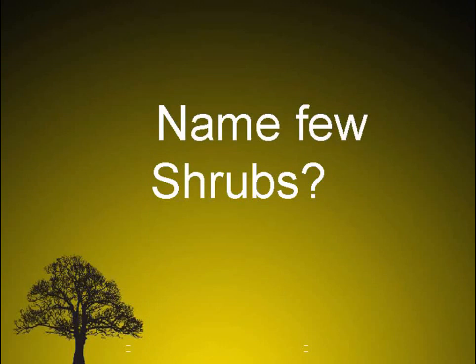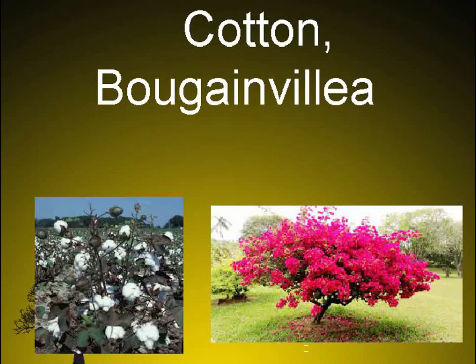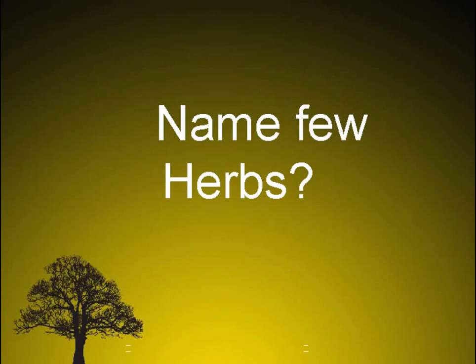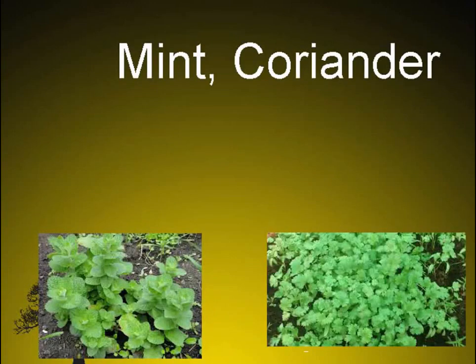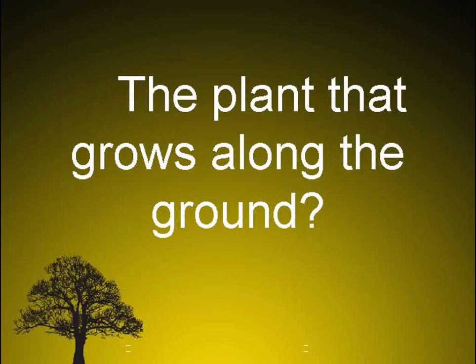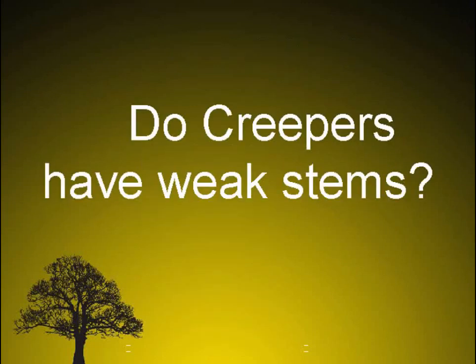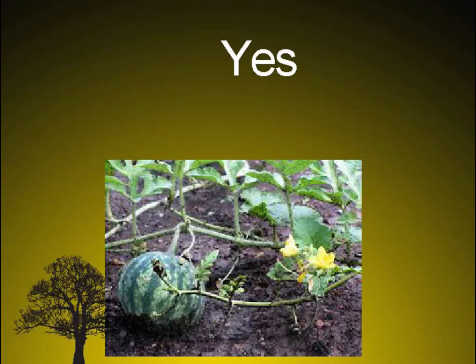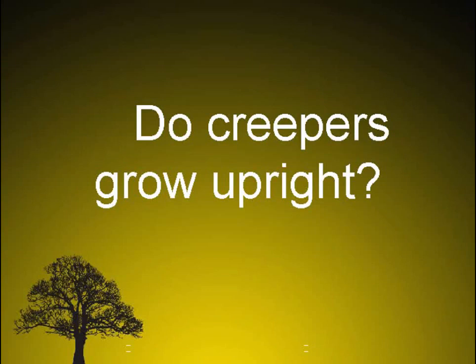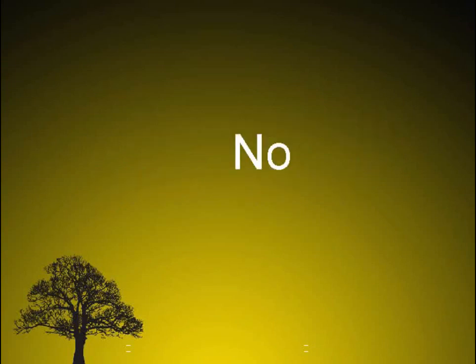Name a few shrubs. Cotton, Bougainvillea. Name a few herbs. Mint, Coriander. The plant that grows along the ground is called? Creepers. Do creepers have weak stems? Yes. Do creepers grow upright? No.